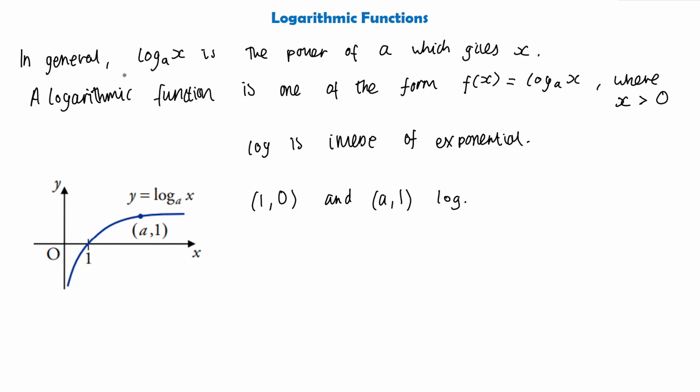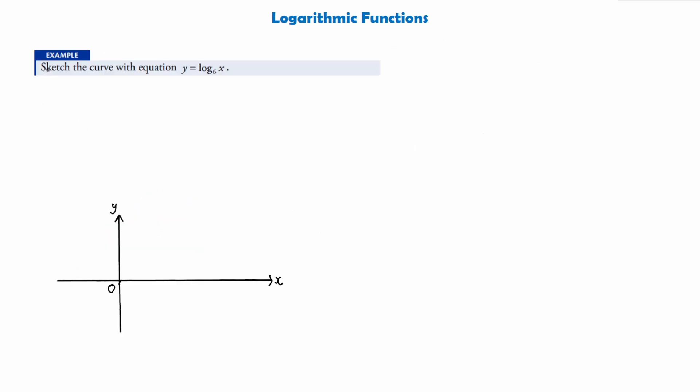So using this definition of a log and an example of what a logarithmic function might look like and the graph of a logarithmic function, let's go on to sketching a curve with the equation of a log. So in this example we are asked to sketch the curve with the equation y equals log to the base 6 of x. Now if we remember, we said that a log always passes through the point (1,0) and (a,1). What is our a in this case? Well we said that logs are of the form log base a of x, so our a in this case is going to be 6.